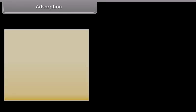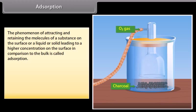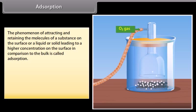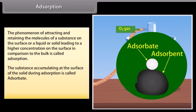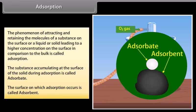Adsorption: The phenomenon of attracting and retaining the molecules of a substance on the surface of a liquid or solid, leading to a higher concentration on the surface in comparison to the bulk, is called adsorption. For example, when oxygen gas is taken in a closed vessel containing powdered charcoal, the pressure inside decreases due to adsorption of gas molecules on the charcoal surface. The substance accumulating at the surface is called the adsorbate, and the surface on which adsorption occurs is called the adsorbent.